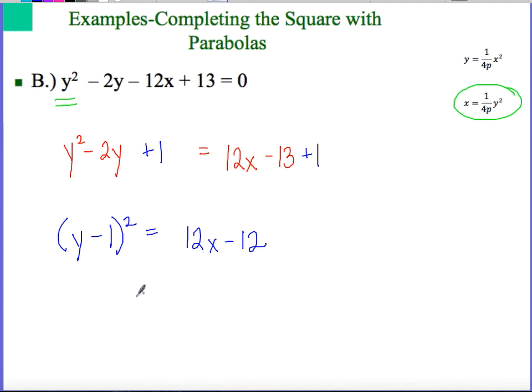This still has a 12 over here on the right-hand side. So what we also need to make sure to do is we're going to factor a 12 out of the right-hand side, and that's going to leave me with (x - 1). Now you can tell that the vertex is going to be at positive 1 for the x and also positive 1 for the y.